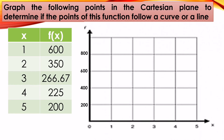Let us graph. This is our Cartesian coordinate plane where y is f(x) and x goes 1, 2, 3, 4, 5. We plot the points: (1, 600), (2, 350), (3, 266.67), (4, 225), and (5, 200). When we connect these points, what do you observe? The graph is a form of a curve — it is not a straight line.